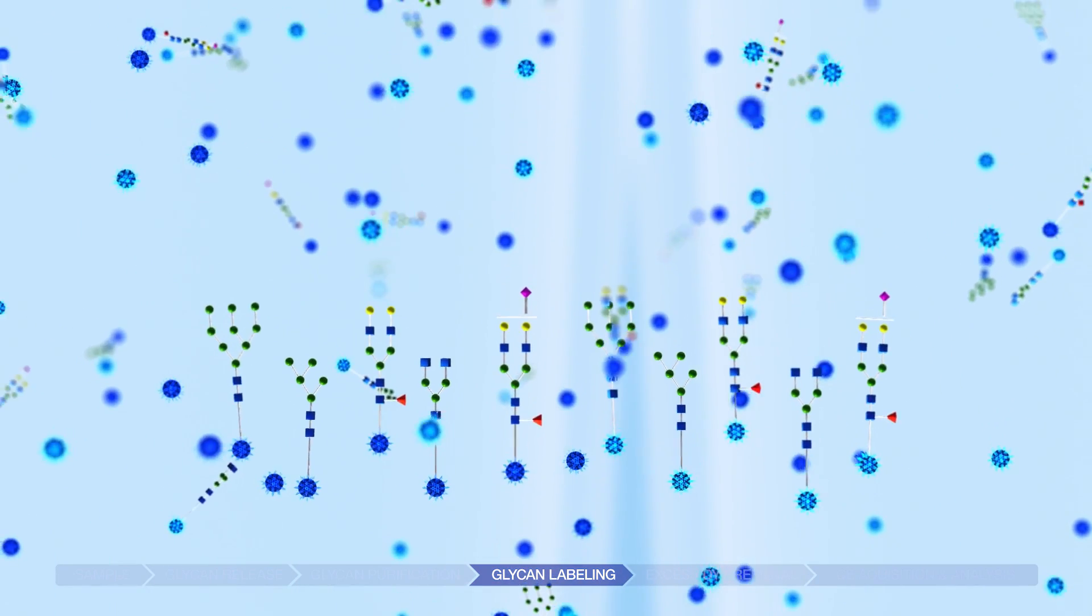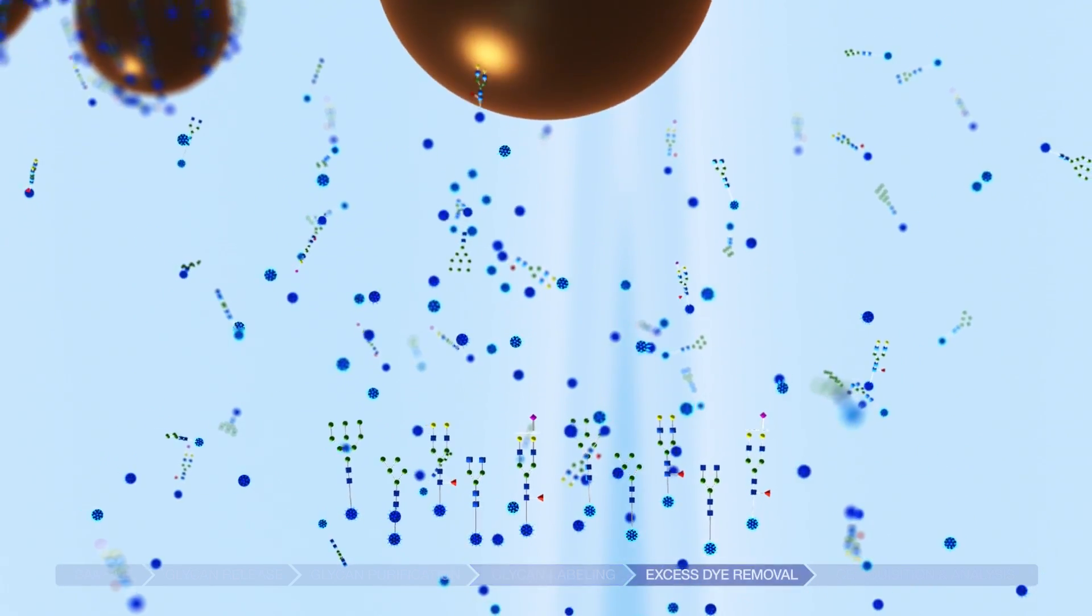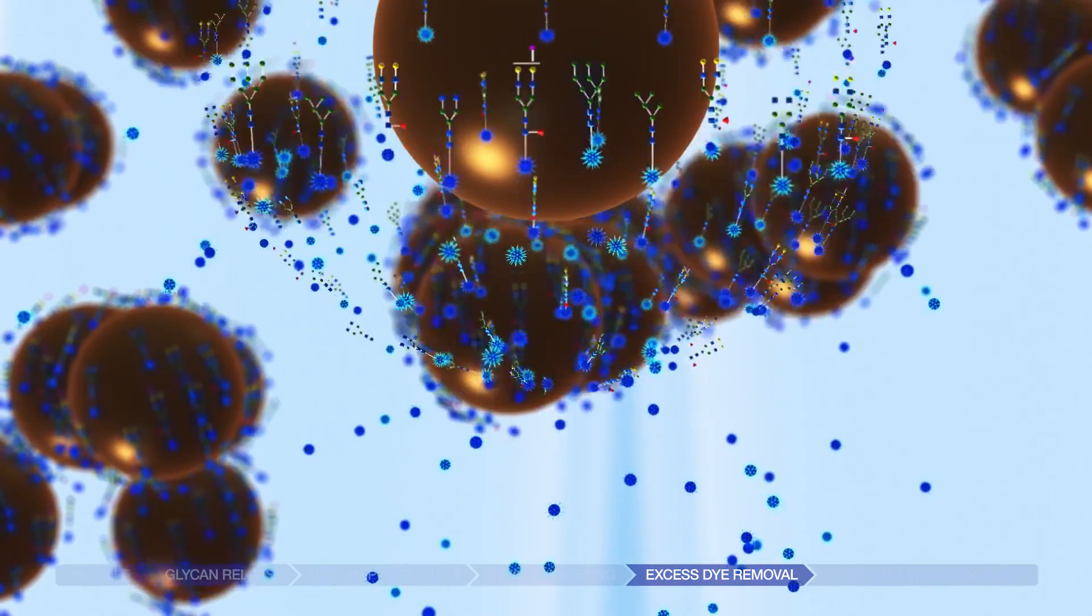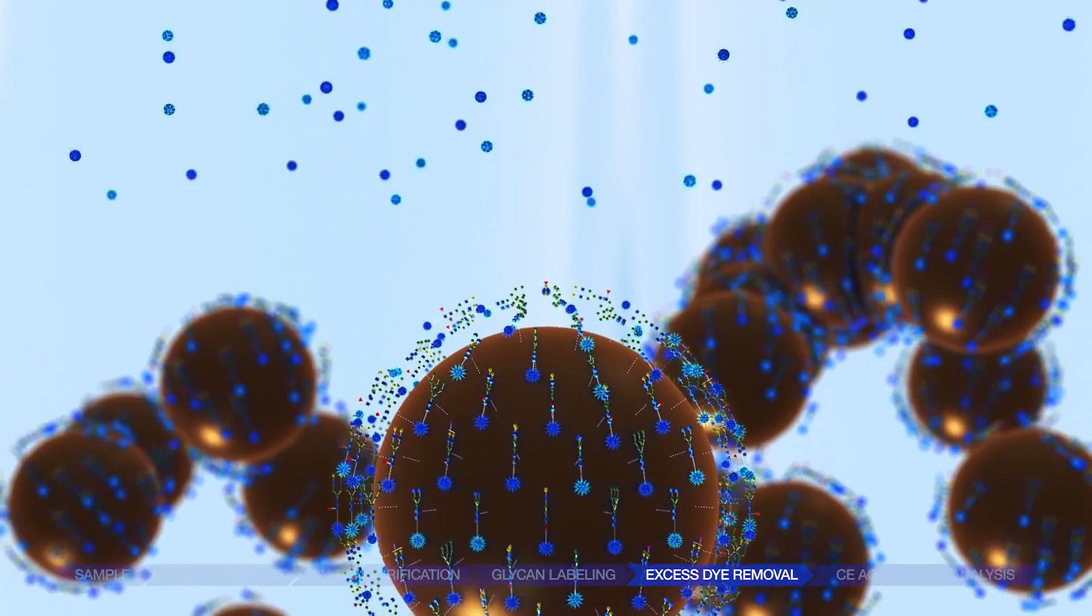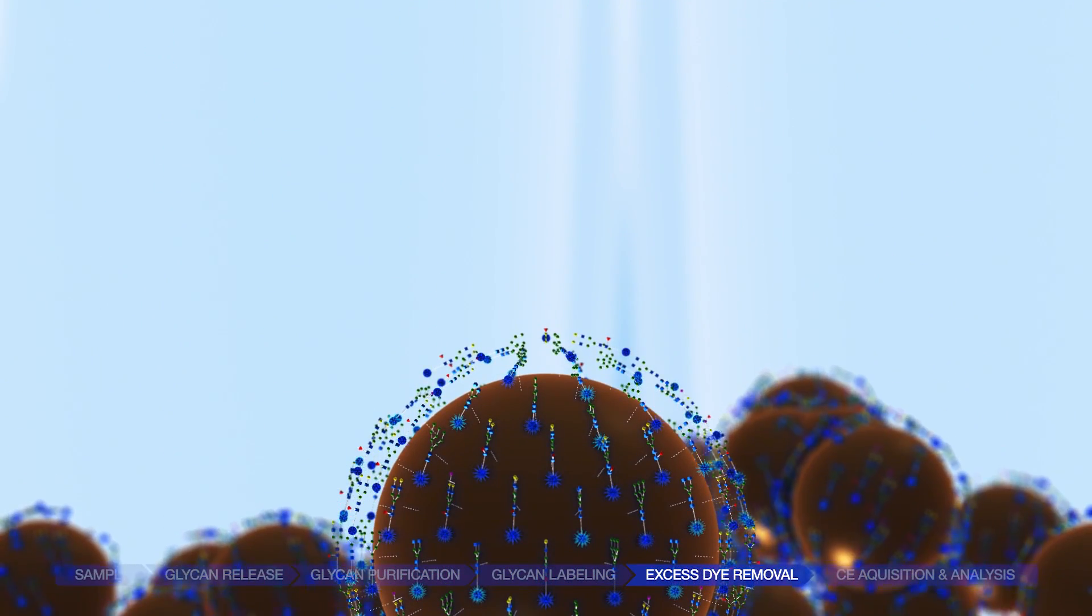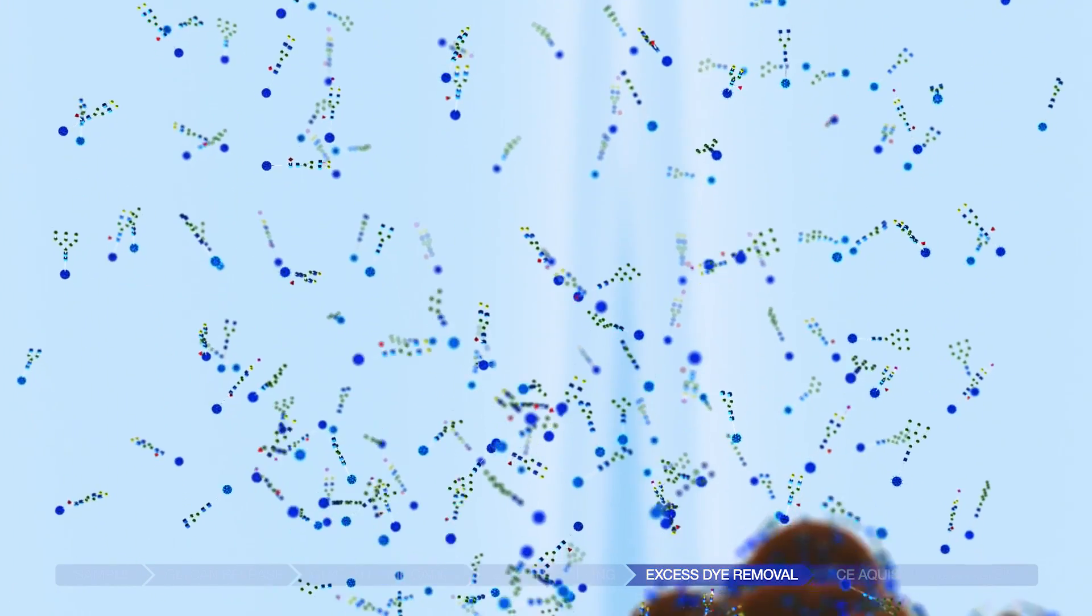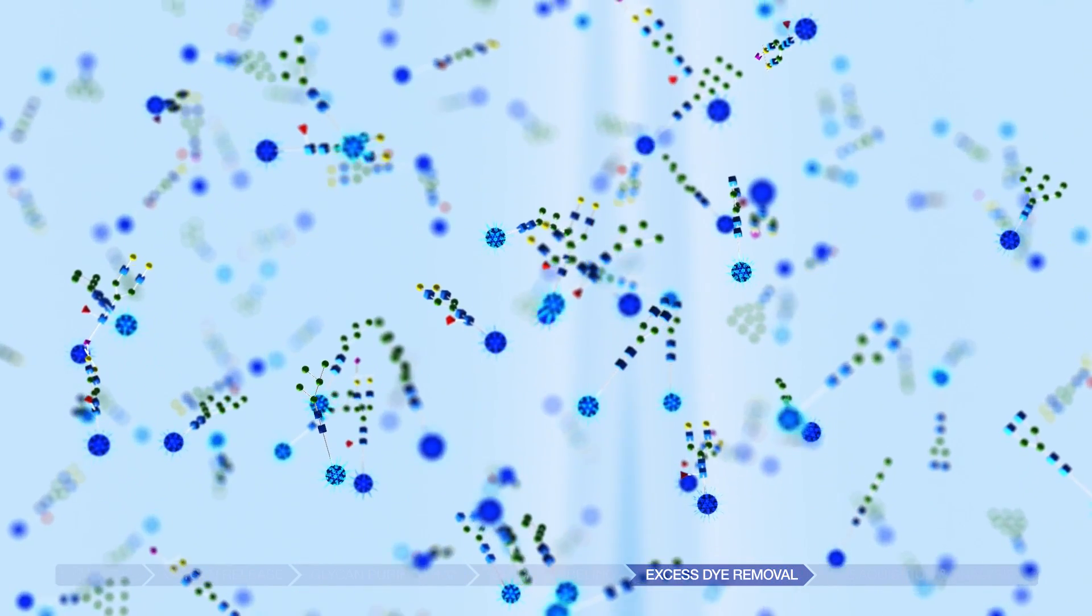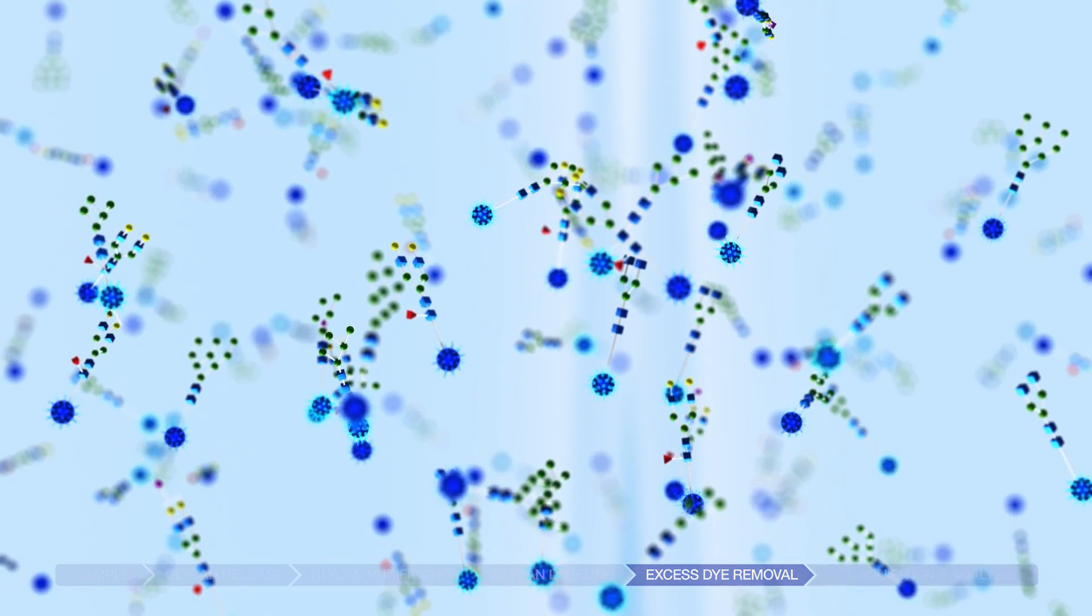For APTS and turquoise, the excess dye is removed. This step is not needed for teal. Magnetic beads are added, and the dye-labeled glycans bind to the beads. The beads are separated, leaving the dye-labeled glycans ready for CE acquisition and analysis with the 3500 or 3500XL protein quality analyzer and the Glycan Assure acquisition and analysis software packages.